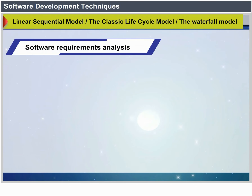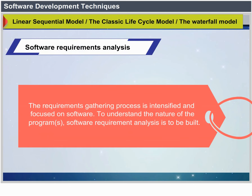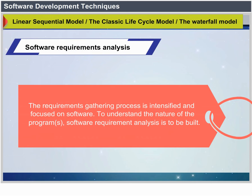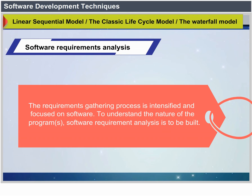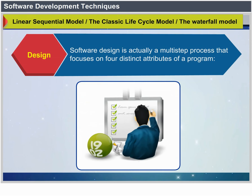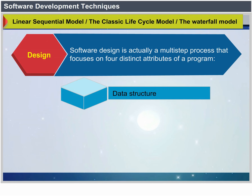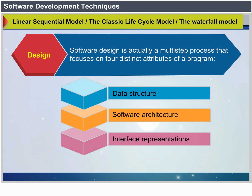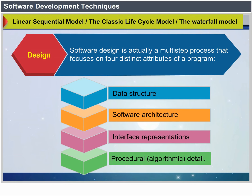Software Requirement Analysis: the requirements gathering process is intensified and focused on software, to understand the nature of the programs to be built. Design: software design is a multi-step process that focuses on four distinct attributes — data structure, software architecture, interface representations and procedural, algorithmic detail.